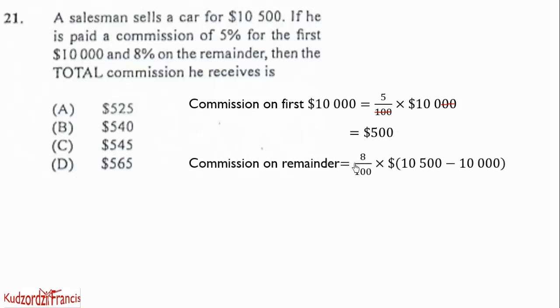Then the commission on the remainder. To get the remainder, we subtract the $10,000 from the $10,500 and apply the percentage which is 8% on it. So that will give us $500.